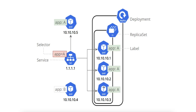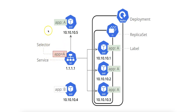In summary, this diagram shows how a Kubernetes deployment manages multiple pod replicas of an application (app-a), how a replica set ensures a consistent number of replicas, and how a service routes traffic to these pods using a label selector.